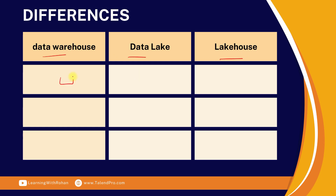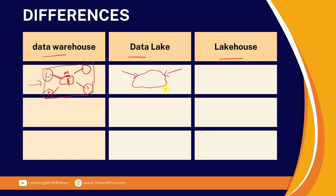Let's start by defining each of the systems. A data warehouse is a centralized fact table with multiple dimensions — different dimensions can be like customer, product, or time, and the central fact can be order sales and other metrics or numbers. It's surrounded by dimensions and a centralized fact table. A data lake is a collection of data from a variety of sources — transaction systems, IoT devices, or any data coming from external systems. And a lakehouse is a combination of both.